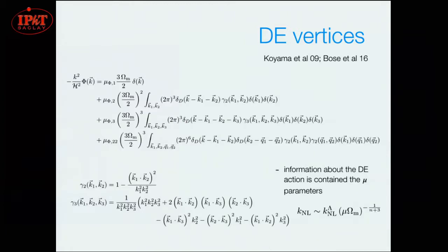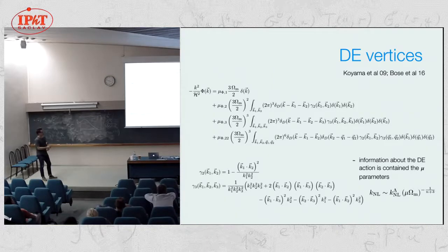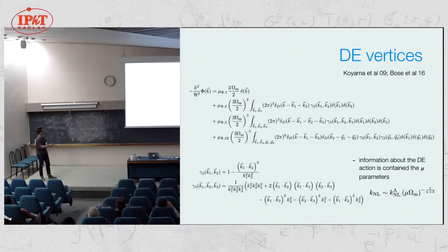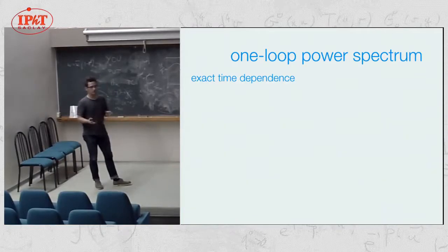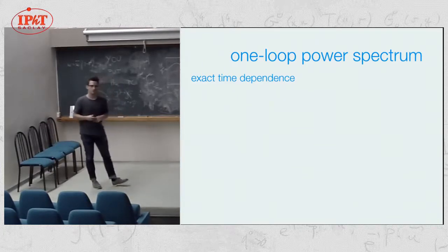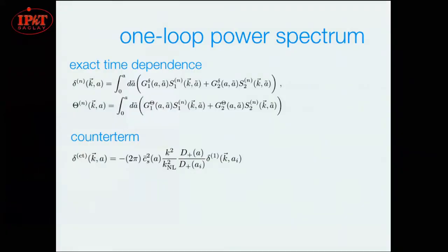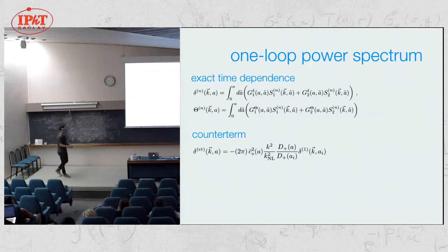These mu's change the nonlinear scale by something that depends on the scale of the linear power spectrum n. Now we want to solve this for the one-loop power spectrum. One important thing is we have to use exact time dependence because there's no EdS approximation we can use. We just have to have Green's functions. The counter term has the same functional form as before. There's no new kind of UV dependence from these vertices, although the actual numerical value of CS could be different because the small-scale physics could be different.